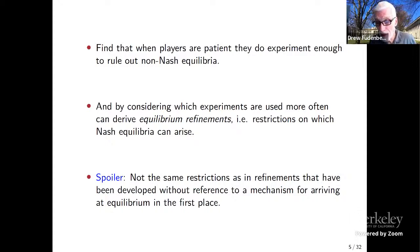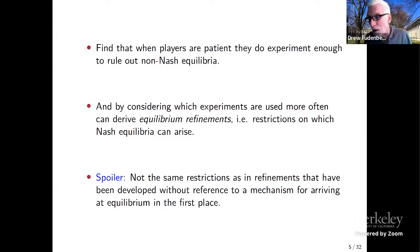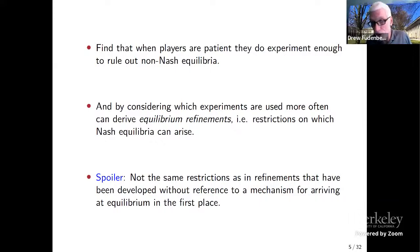So it'll be kind of like the classic equilibrium refinements literature, but as we'll see it's not the same — it's not the same restrictions as those developed in the classic literature. That's maybe not surprising, because the classic literature on equilibrium refinements developed without any reference to any mechanism by which players might get to an equilibrium in the first place, and certainly no consideration of learning. So that's the overview. Let me get into the model and results now.